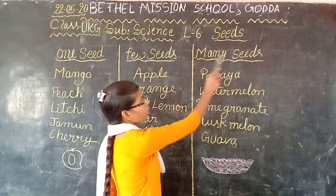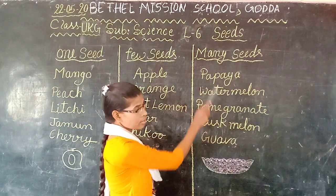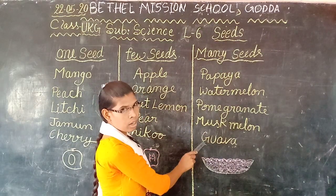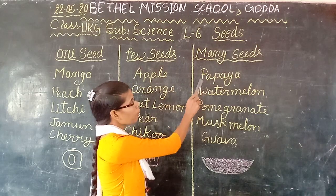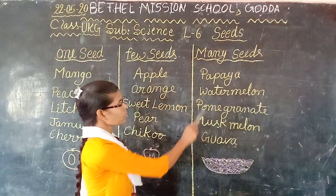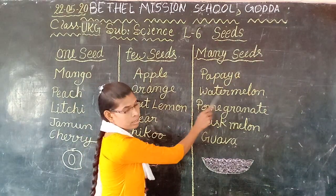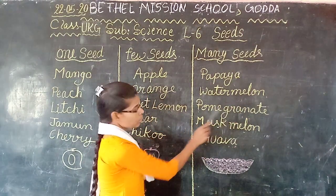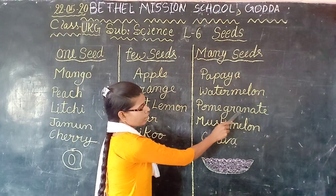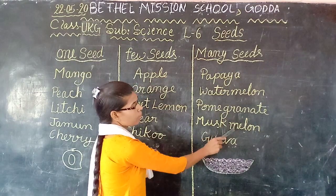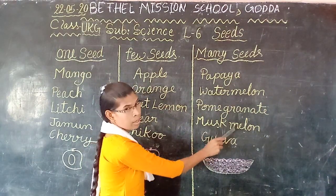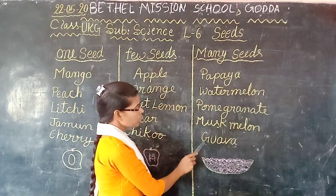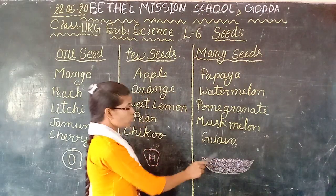Now next we will see many-seeds fruits. The many-seeds fruits are: papaya — P-A-P-A-Y-A; watermelon — W-A-T-E-R-M-E-L-O-N; pomegranate; muskmelon — M-U-S-K-M-E-L-O-N; guava. So children, here there are plenty of seeds.